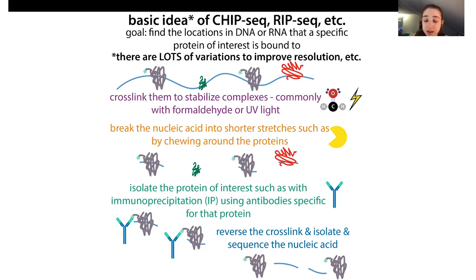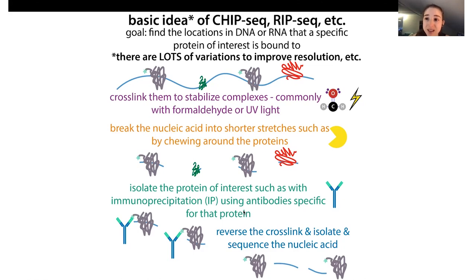Formaldehyde crosslinks are reversible. If you're doing formaldehyde crosslinking in the lab, as I found out the hard way, you don't want to boil your samples when doing SDS-PAGE to see if the crosslinking worked. For ChIP-seq, the reversibility is actually very helpful because it allows you to then isolate and sequence the nucleic acid.